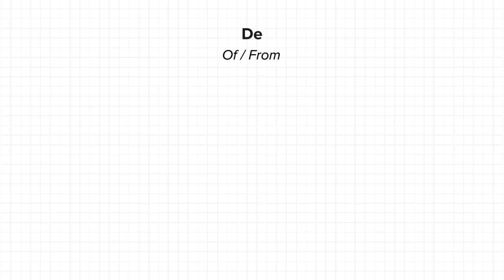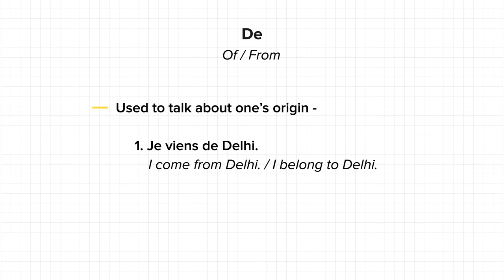Let us see the preposition 'de' first. De has quite a few usages in the French language. Firstly, it is used to talk about one's origin. For example, 'I belong to Delhi' or 'I come from Delhi' would be 'Je viens de Delhi'. So basically, you would use this with any country or city that is a proper noun. Imagine if someone belongs to London — he or she would say 'Je viens de Londres'.